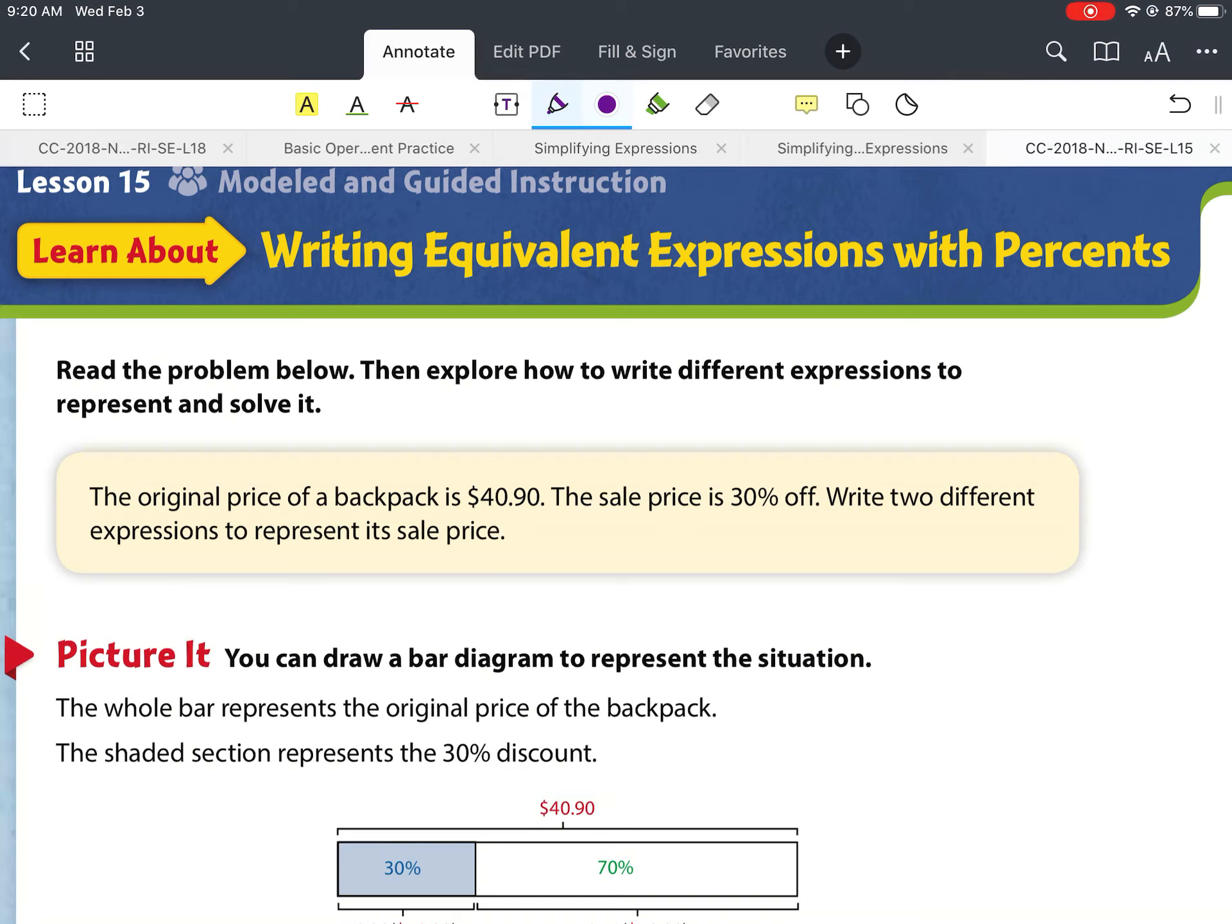Okay, so we're going to begin part three of lesson 15. Turn your instruction book to page 140, and let's begin. It says, read the problem below, then explore how to write different expressions to represent and solve. So it says, the original price of a backpack is $40.90. The sale price is 30% off. Write two different expressions to represent its sale price. First of all, you will need a calculator for this particular problem. Most of these types of problems are going to be calculator active.